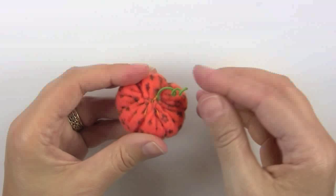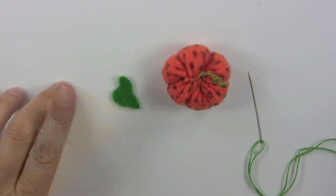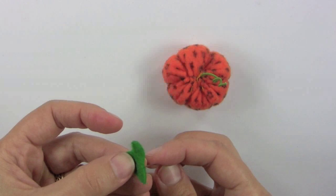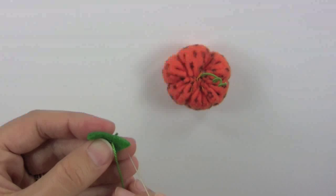For the leaf I just kind of cut a blobby kind of leafy shape out of green felt. What I'm going to do is create a little leaf stem by sewing just a little stitch right on here with green embroidery thread just like that.